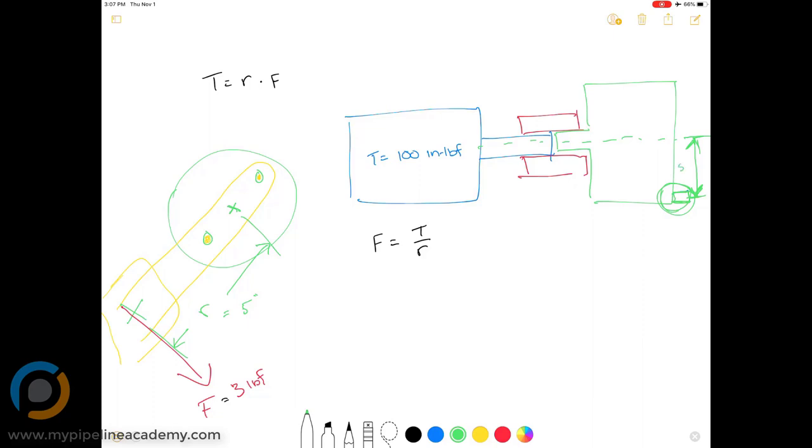It would be this distance right here. Let's say that's five inches. So going back to our equation, force equals torque over radius. So that equals 100 inch pounds of force over five inches equals 20 pounds of force. So we know that if we applied 20 pounds of force right here at that little tab that's sticking out, that prong there, we'd be able to stop the motor.